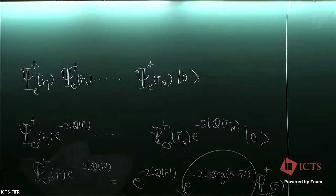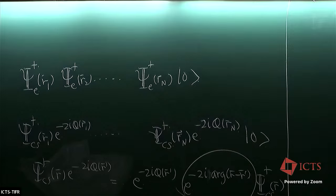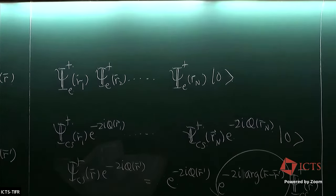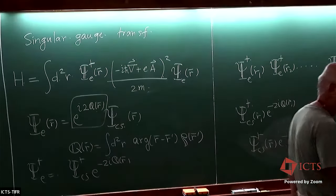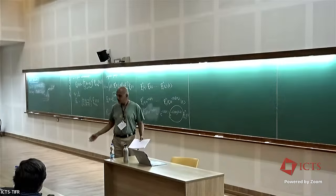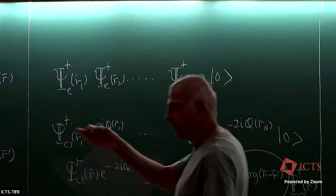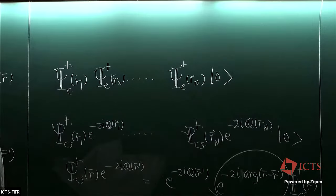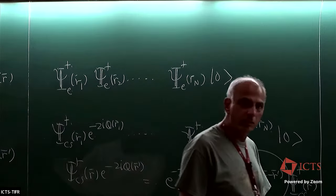When r equals r′ the argument function is ill-defined, so you have to regulate it — for example by smearing it with a small Gaussian. If you do it in a symmetric way you find that it commutes, and since the wave function also vanishes when r → r′, it actually doesn't matter. At the level of operator commutation relations you have to be a little careful, but it can be done.